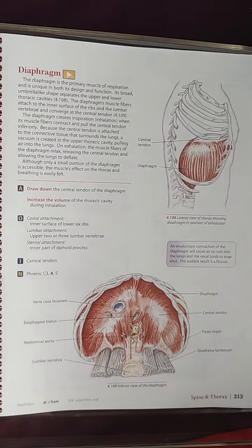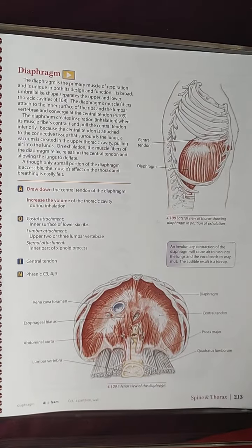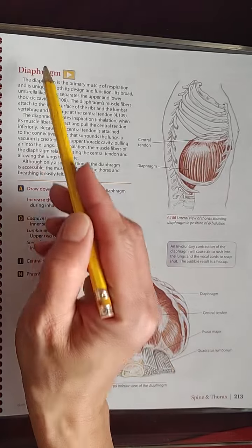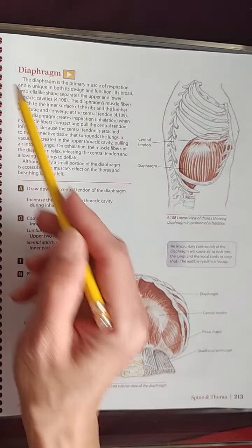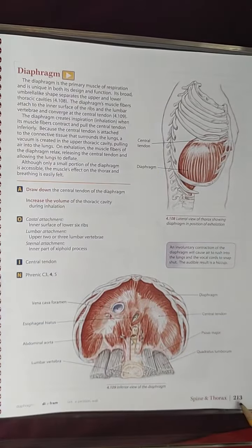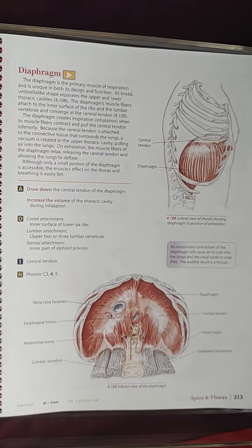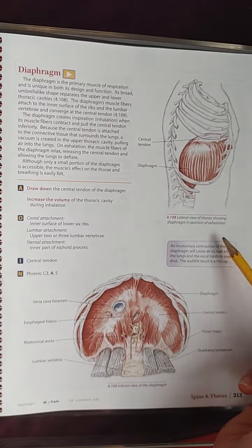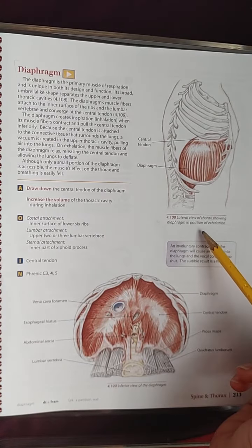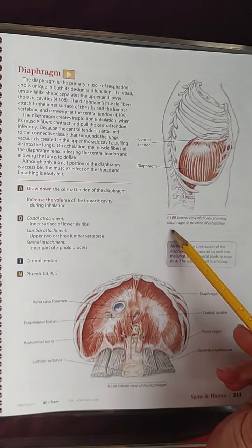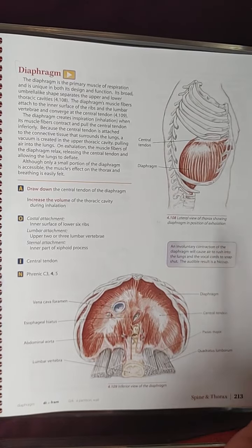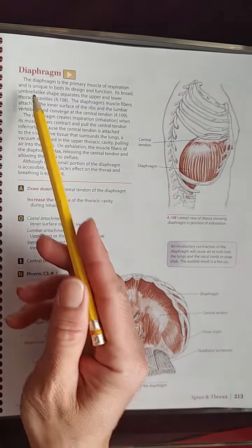Hi guys, we're still in Trail Guide to the Body presenting the diaphragm, and we are at page 213. We're looking at an image here — the lateral view of the thorax showing the diaphragm in position during exhalation.